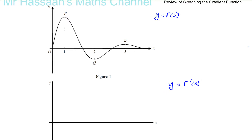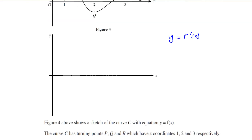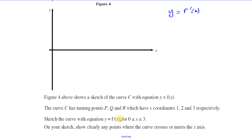The question mentions the curve has turning points P, Q, and R, which have x-coordinates 1, 2, and 3 respectively. Sketch the curve with y equals f dash of x for x between 0 and 3. On your sketch, show clearly any points where the curve crosses or meets the x-axis.